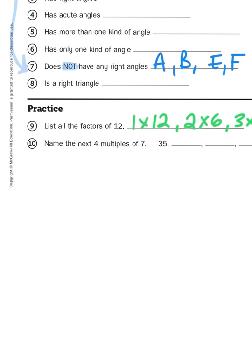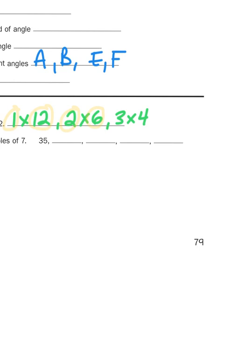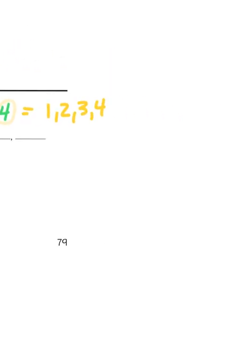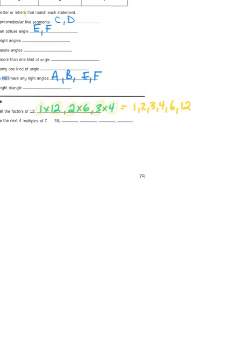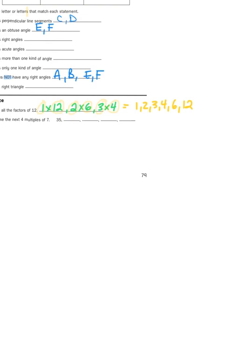So what are the factors of 12? Well, simply put, it would be 1, 12, 2, 6, and 3 and 4. And I could list those out in numeric order like so: 1, 2, 3, 4, 6, and 12. Those 6 numbers are the 6 factors of 12.